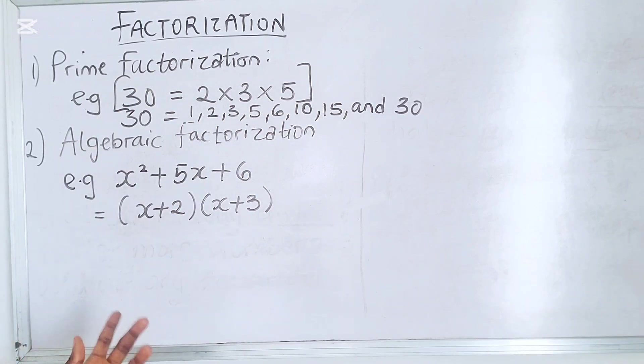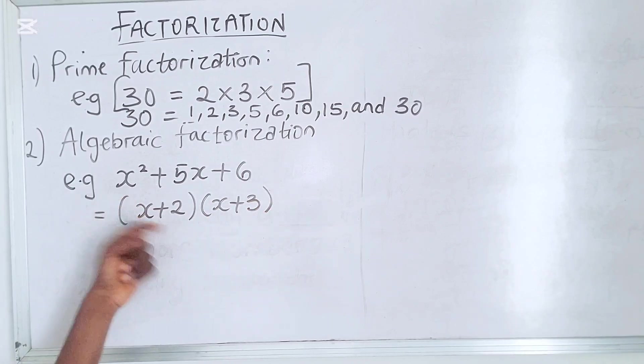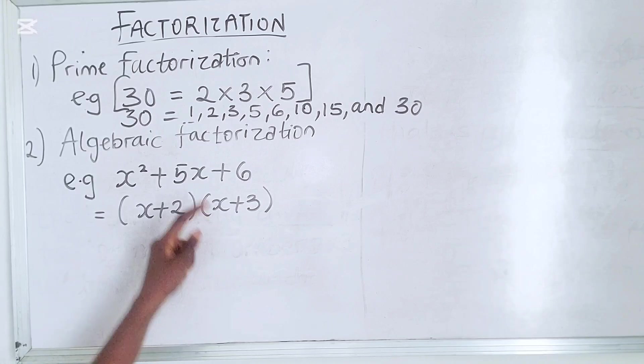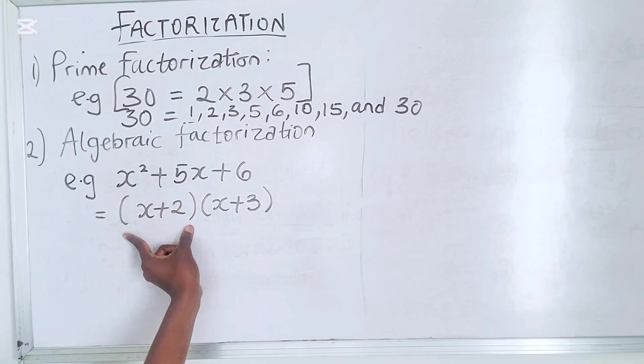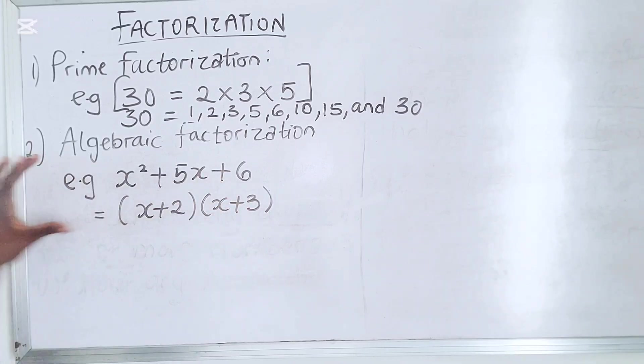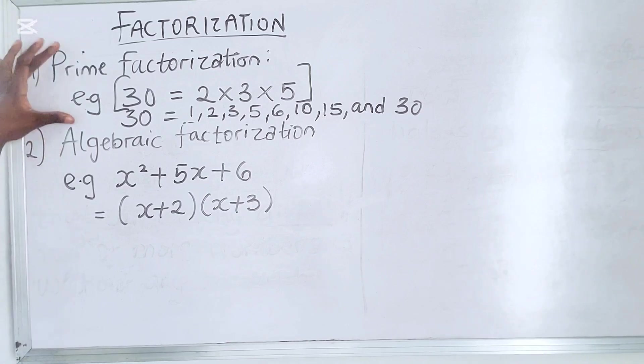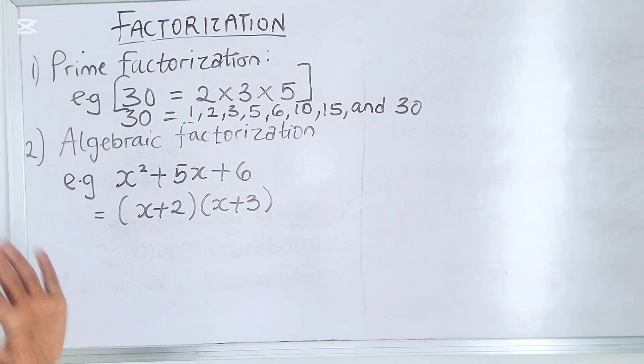In another case, you have the algebraic factorization and that's the one that we'll be dealing with. If you remember clearly from our previous videos, you'll know that expressions do not have equal signs. So you're given an expression like this and you're asked to factorize it. Because these are the factors of this expression. So this is an algebraic factorization. Let's solve examples so you would understand better.